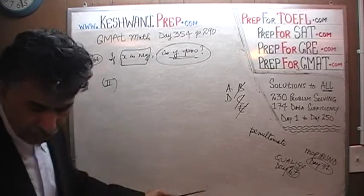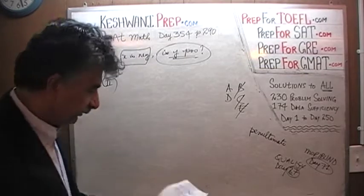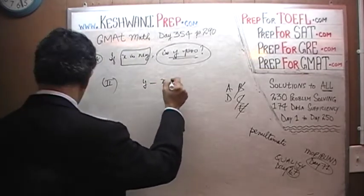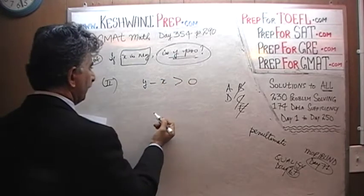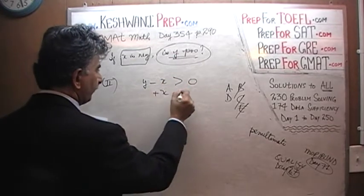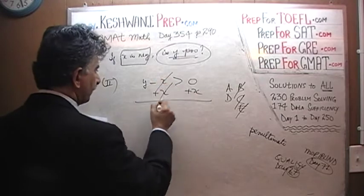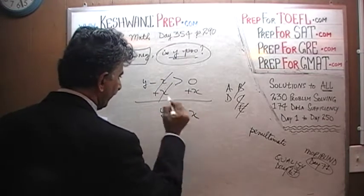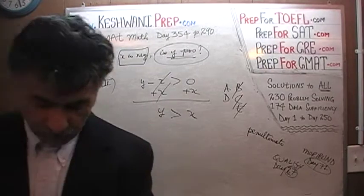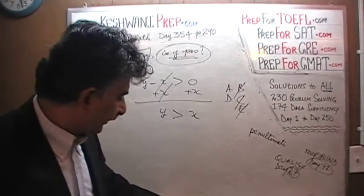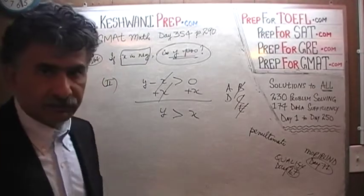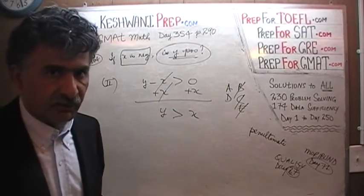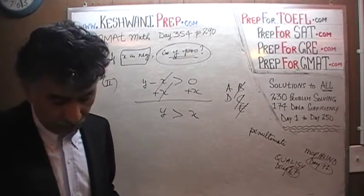In the second statement, they tell us that y minus x is positive. If we add x to both sides, x drops out and what this tells us is that y is more than x. So the question now is, simply by knowing the fact that y is more than x, is there enough data for us to ascertain whether or not y is positive? Let's find out.